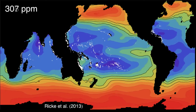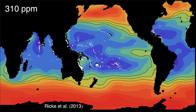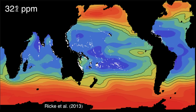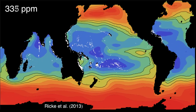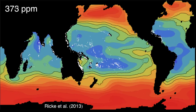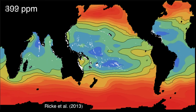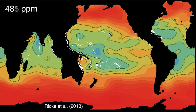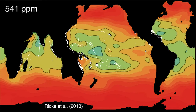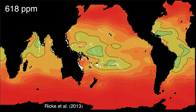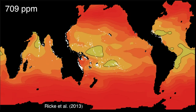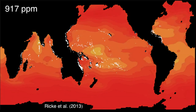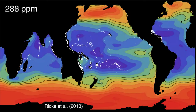The numbers up top show how the atmospheric concentration of carbon dioxide is increasing over time. So as atmospheric carbon dioxide rises, the ocean is becoming less saturated with aragonite. Coral reefs are marked in white on the map.